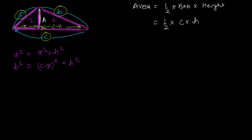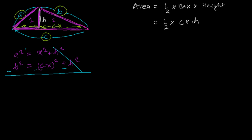I'll use the elimination method. From equation one we have h², and from equation two we have h². Subtracting eliminates h², leaving: a² − b² = x² − (c − x)². Expanding the right side: a² − b² = x² − (c² − 2cx + x²).